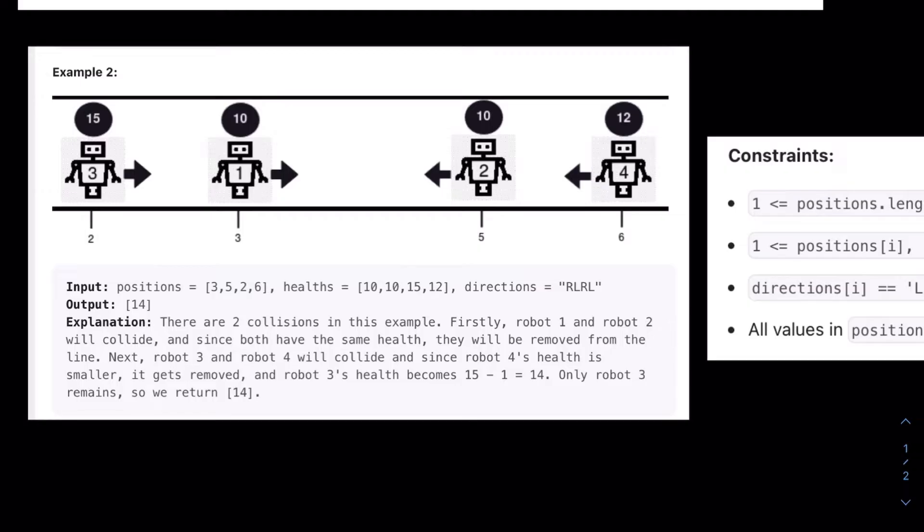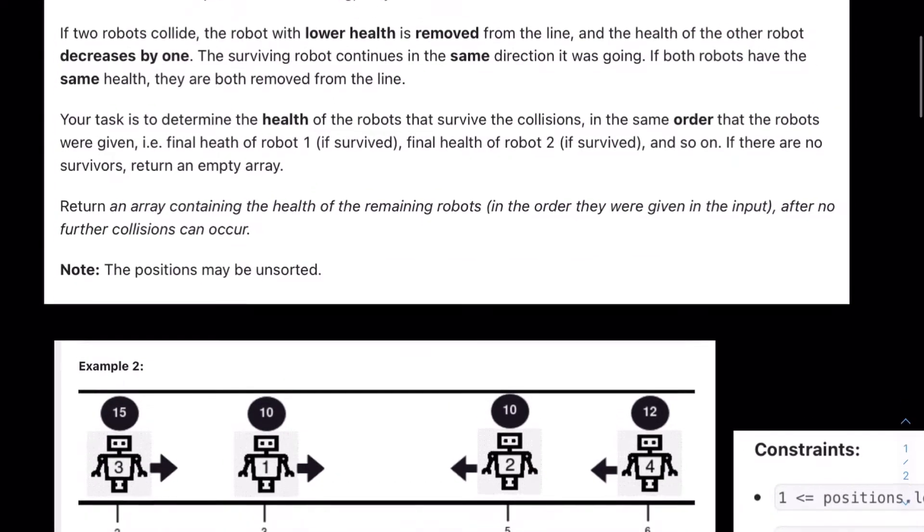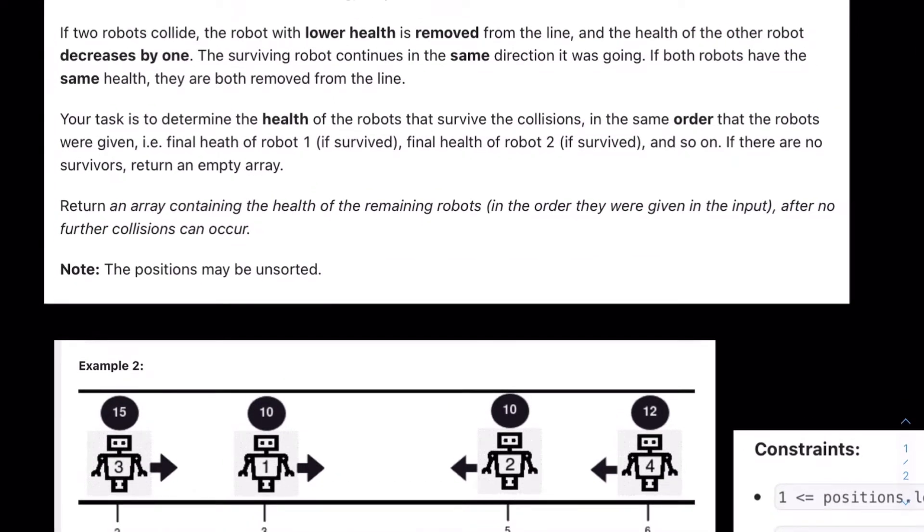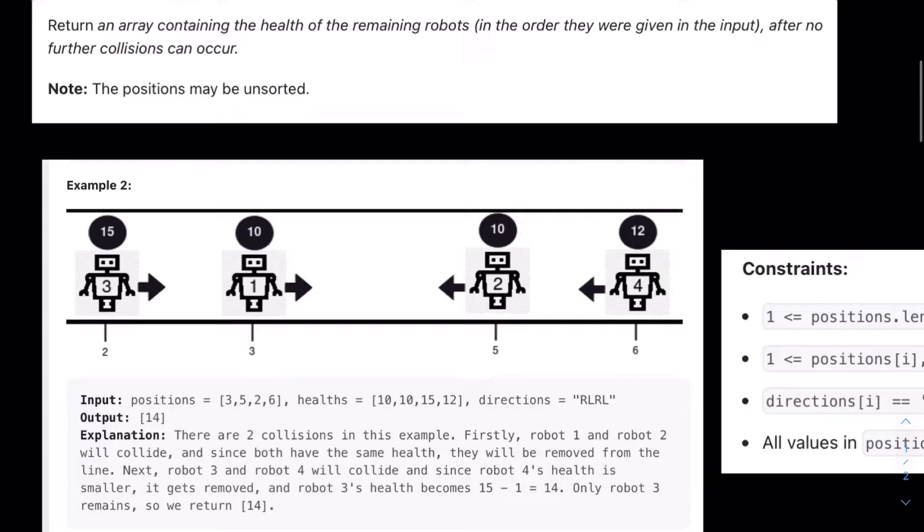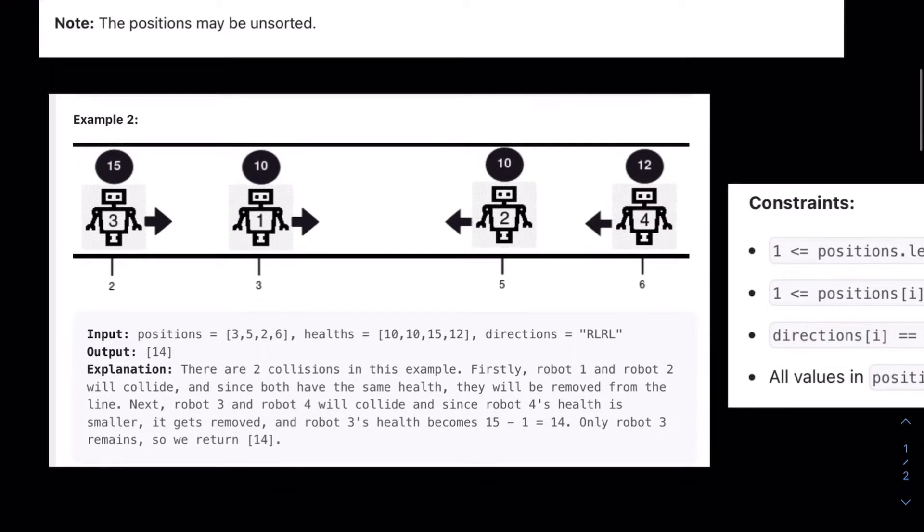They will both break because they have the same HP. Remember, if two robots collide and have the same health, they will both be removed from the line. And then, after that happens, this robot at number 2 and robot at number 6 will also collide. And this robot number 2, at index 2, has more HP.